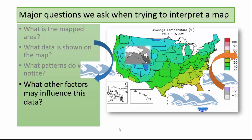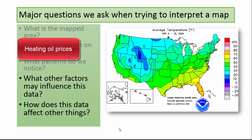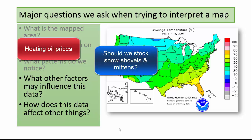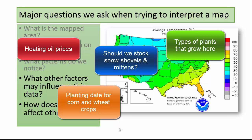The final thing we ask ourselves when interpreting a map is: how does this data affect other things? Consider all the things this map could have an influence on: heating oil prices, cold weather gear stocked in stores, types of plants found in these locations, the first planting date for corn and wheat crops, and many, many others.